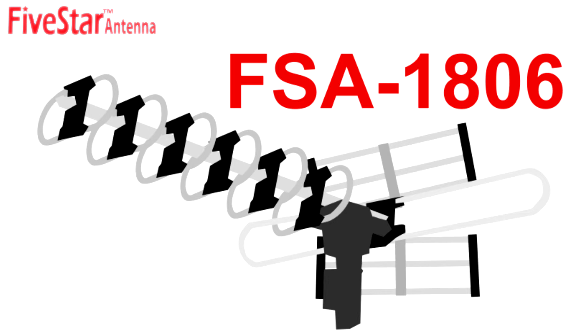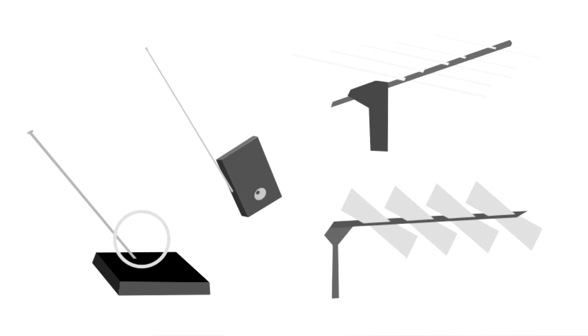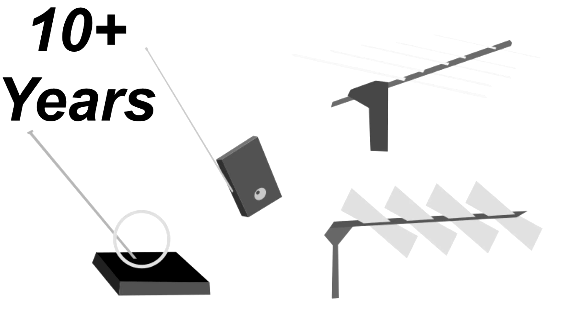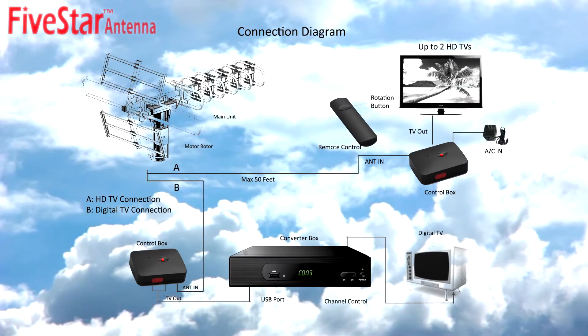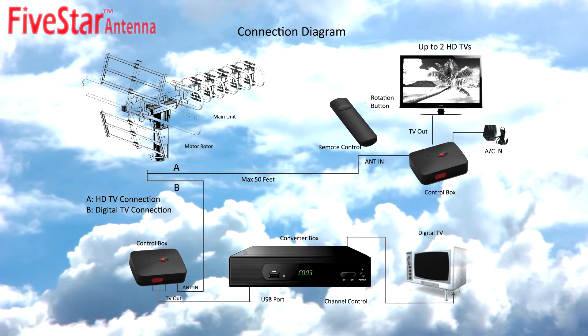The FSA 1806's outstanding design outclasses the older antennas on the market because most other antennas use designs that are over a decade old. And so there's a big difference in image quality and TV channel quantity.